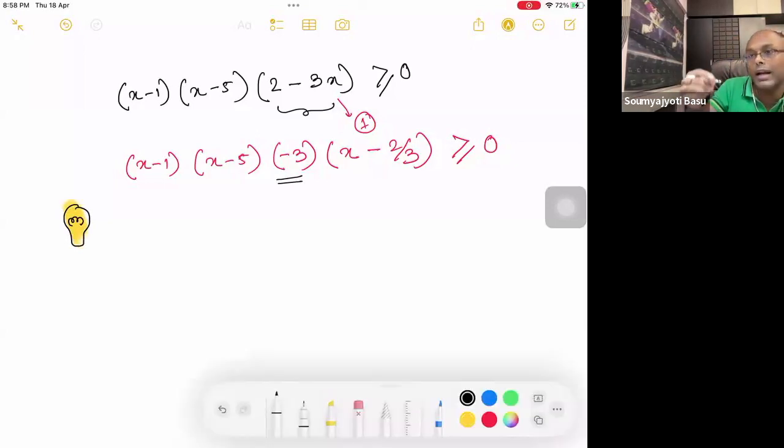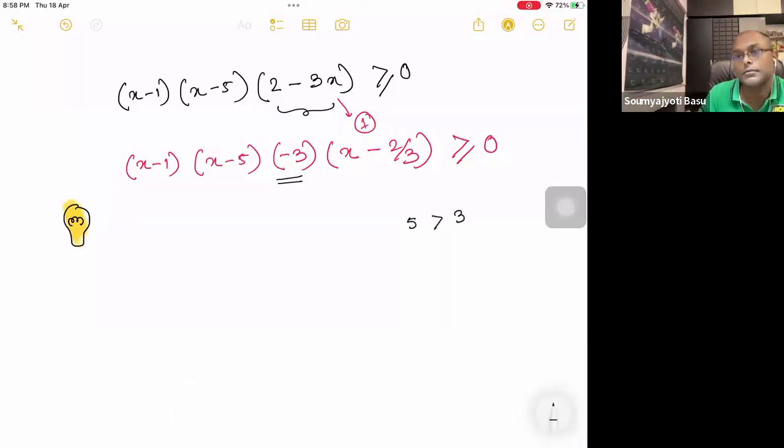We know, I'm giving you an example from real numbers. We know 5 is greater than 3. Can I multiply minus 1 on both sides of an inequality? If we do that, it becomes minus 5 greater than minus 3. But this is completely wrong.